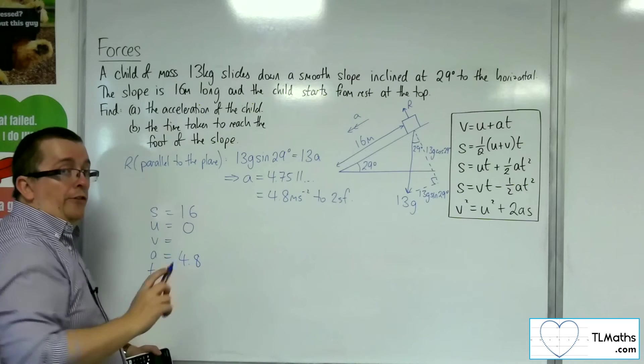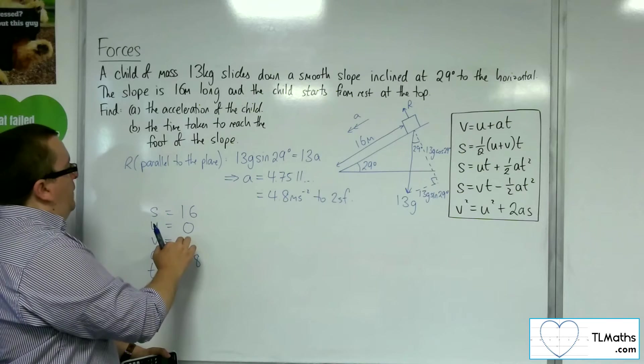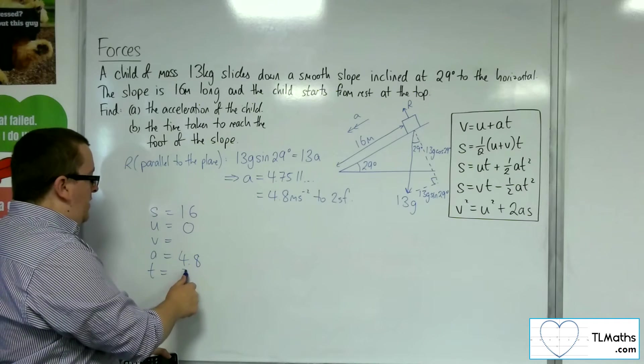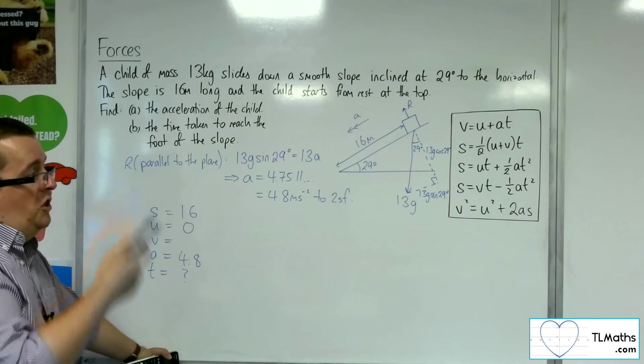I'm going to use the full calculator display there. The final velocity I'm not interested in, it's the time I'm interested in. So I want the equation that doesn't have V, which is the third one.